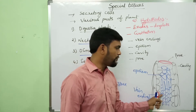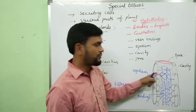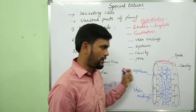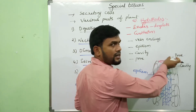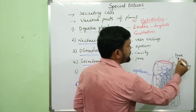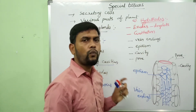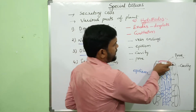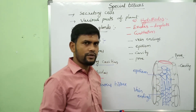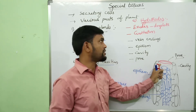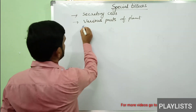Water is transported to the vein endings. From there, water enters into the cavity through the epithem, which is loosely arranged parenchyma. From the cavity, water is forced out into the external atmosphere through the pore. This pore is also called a water stomata.